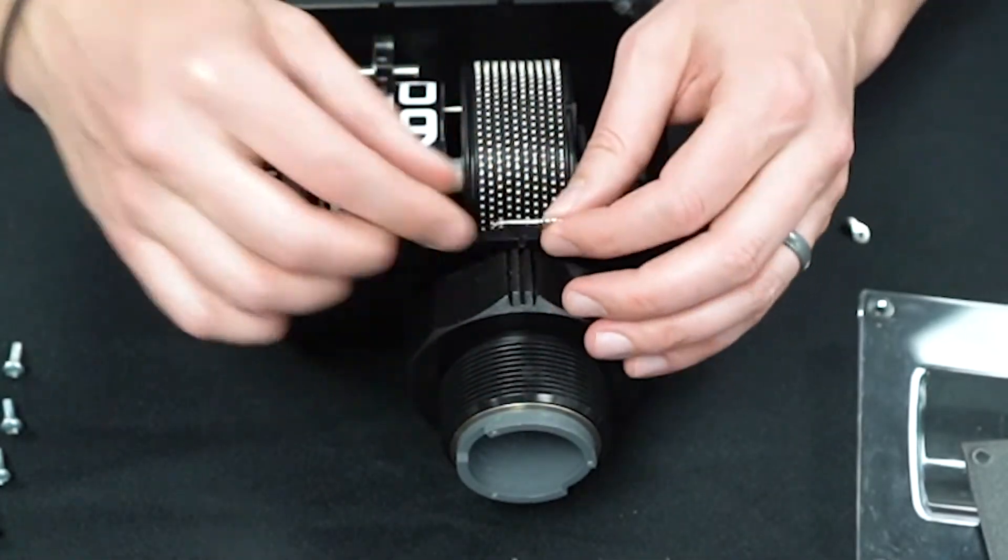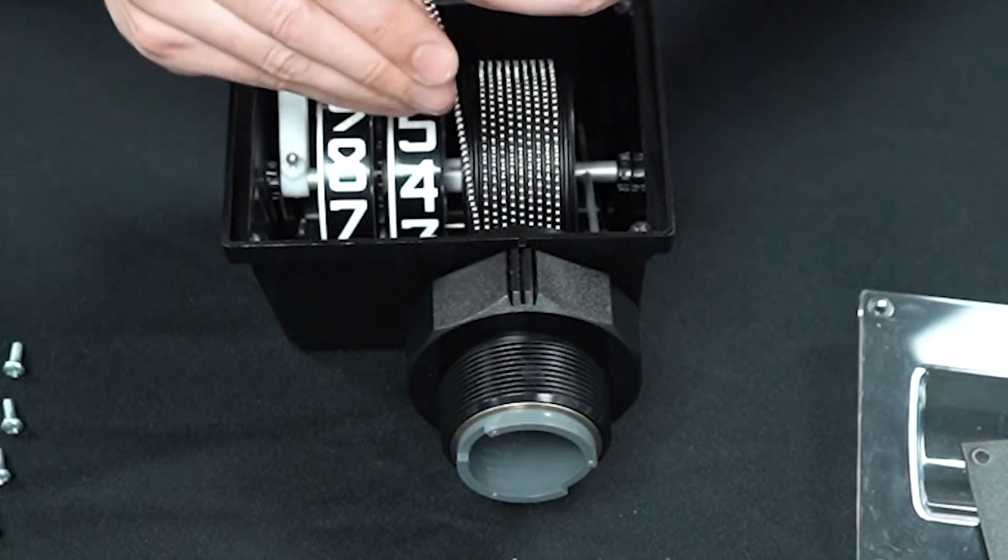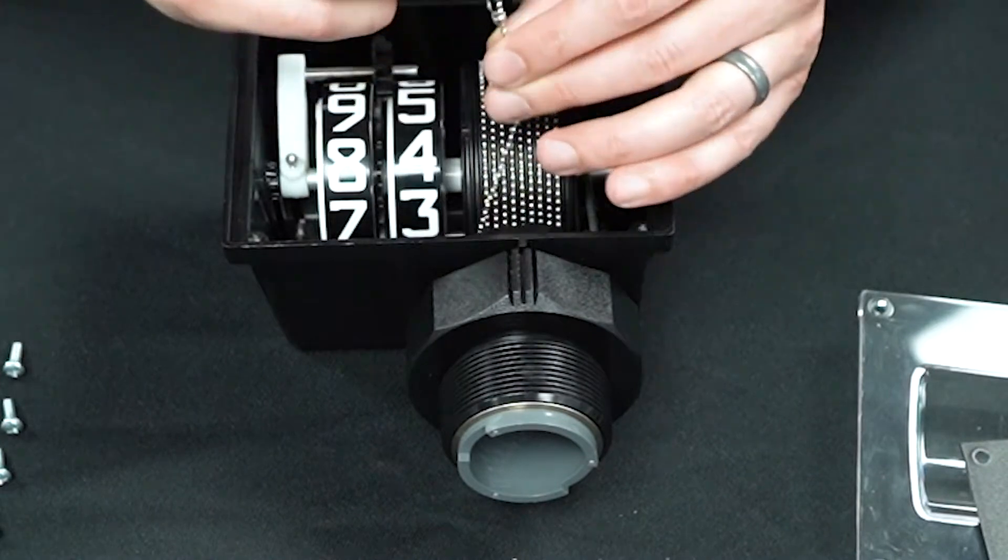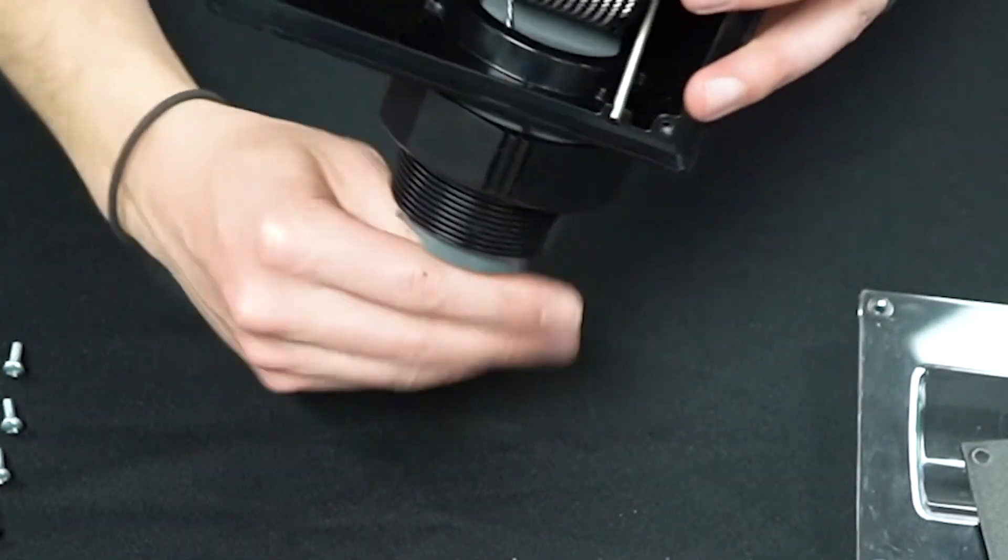When the numbers read 9-9, attach the second eyelet close to the end of the chain. This will help prevent the pulley from accidentally losing all the spring tension or getting the chain tangled.